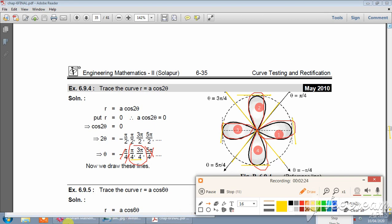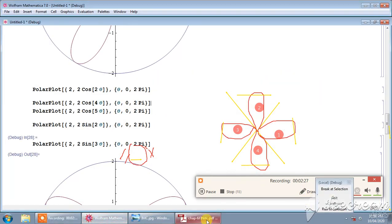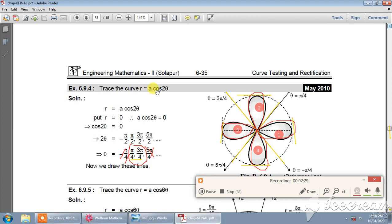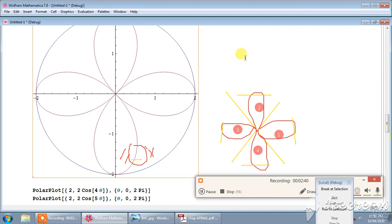So let us see with the help of Mathematica what is the exact shape of r is equal to a cos 2 theta. It is here. So if you compile it, yes, you get a shape like this.